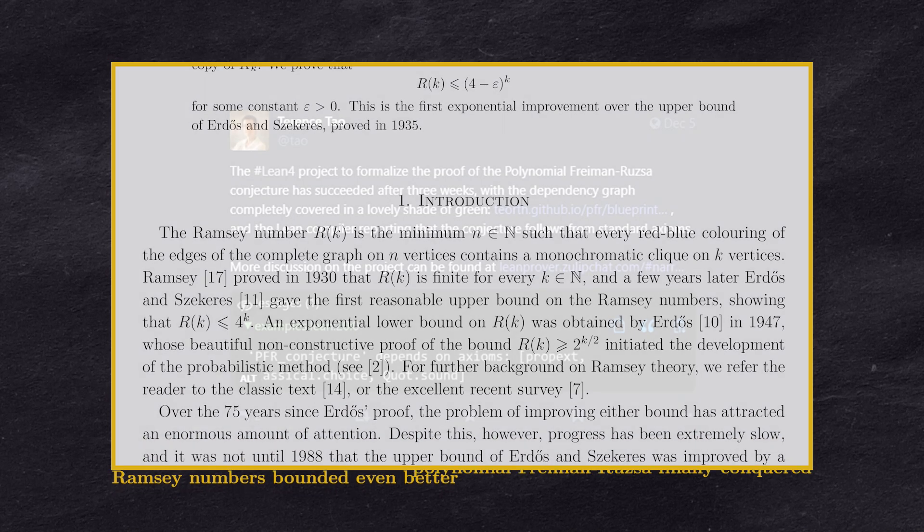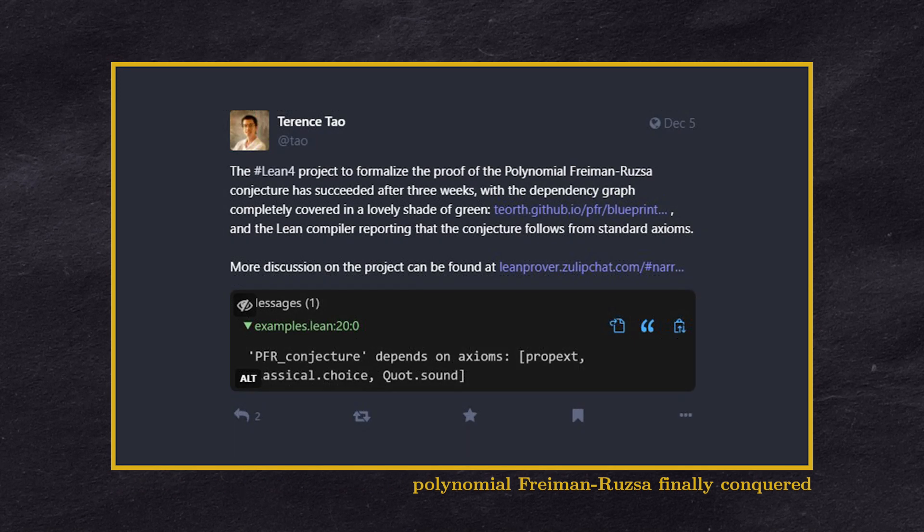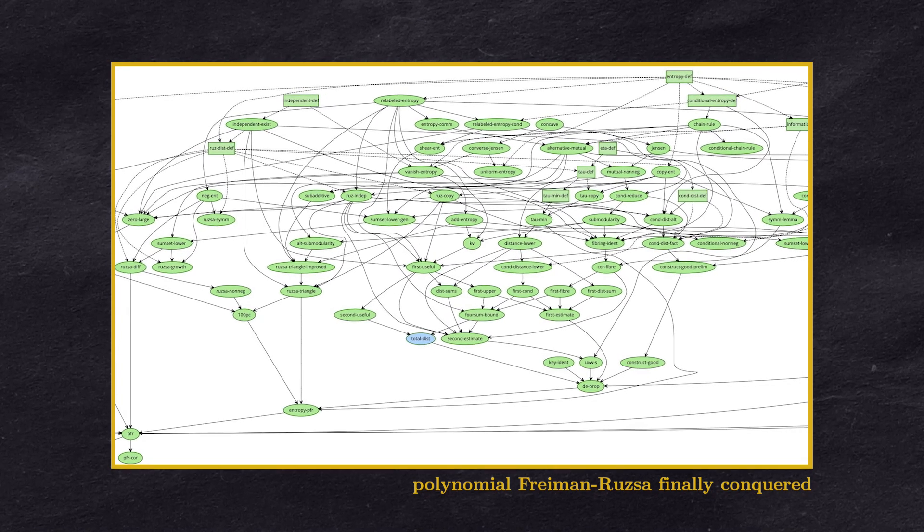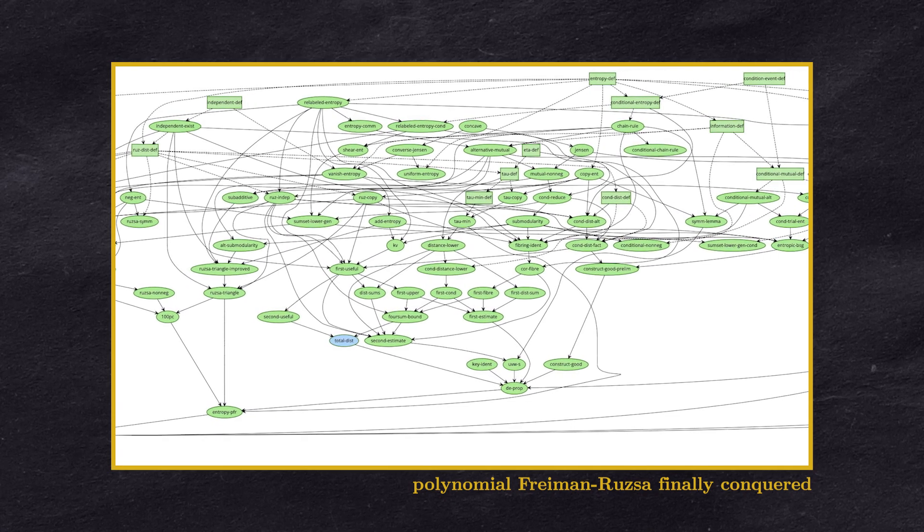Also, very recently Terence Tau and his team proved a famous conjecture in additive combinatorics and then proceeded to formalize it in a theory-improving programming language called LEAN.